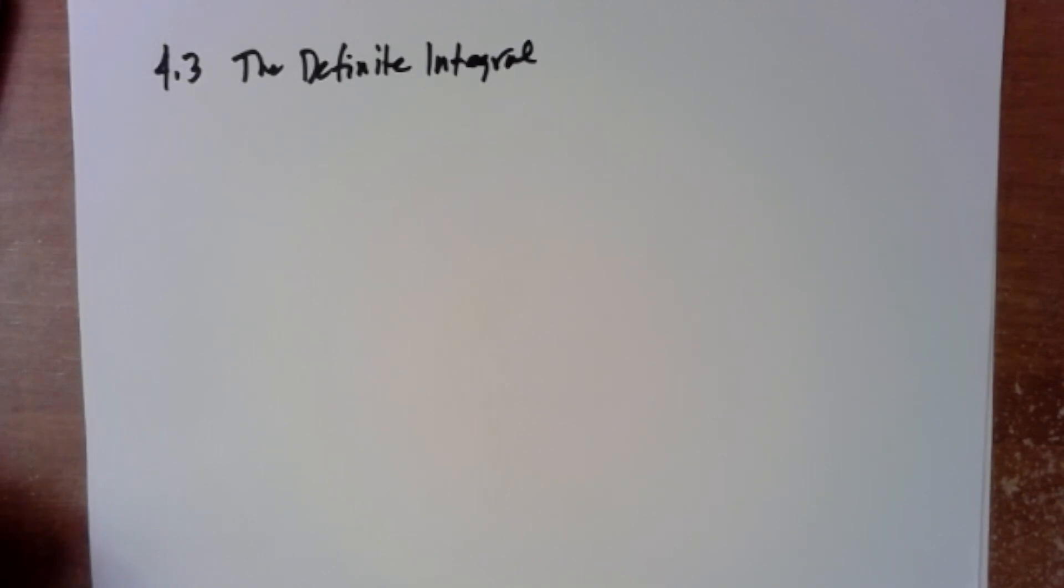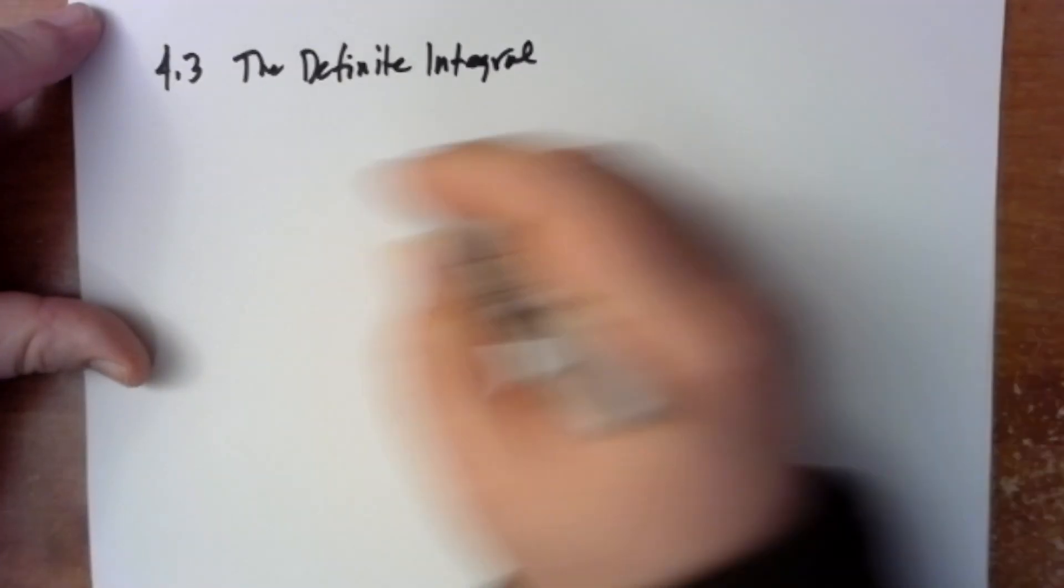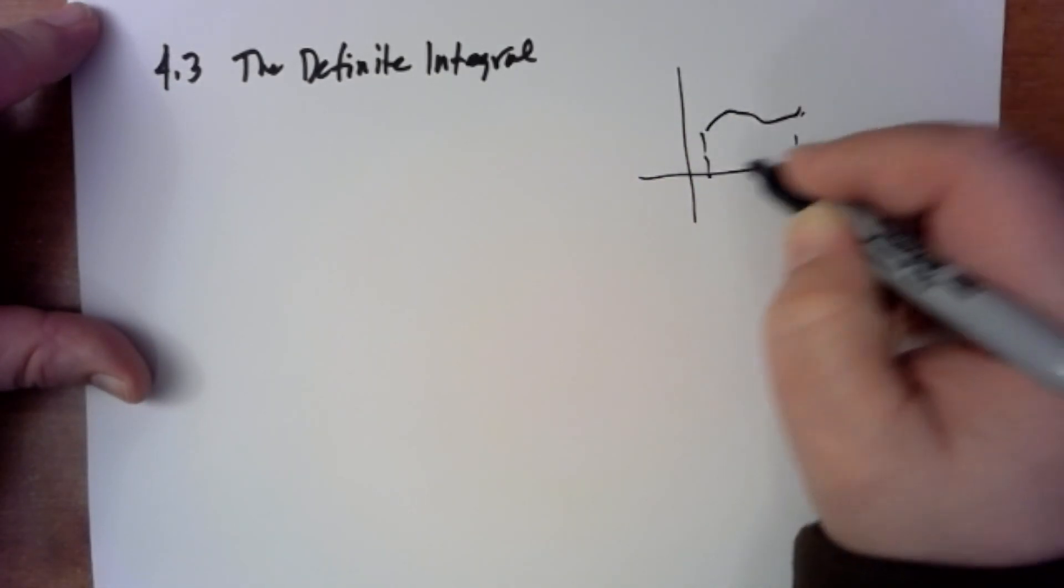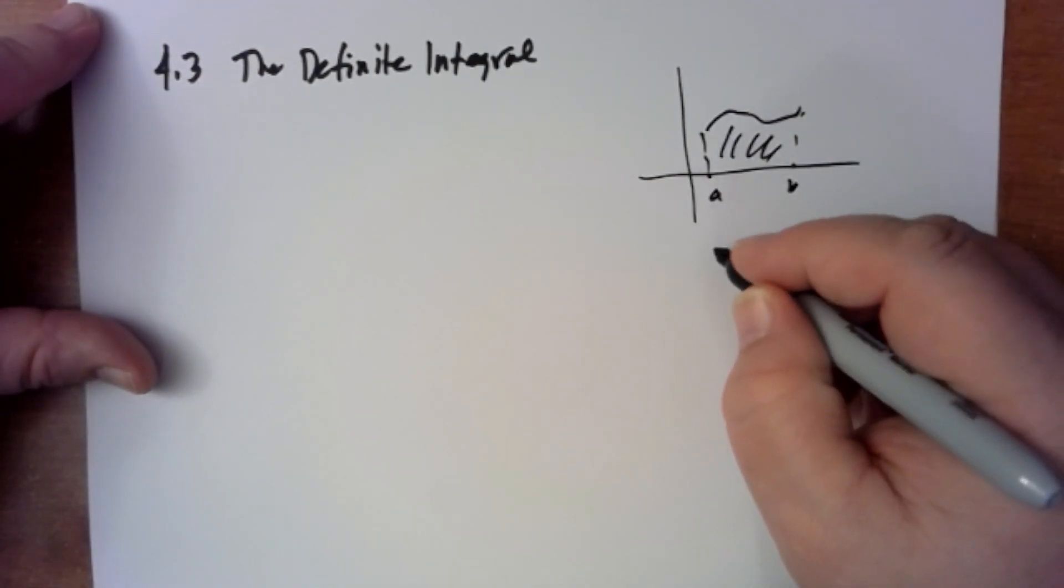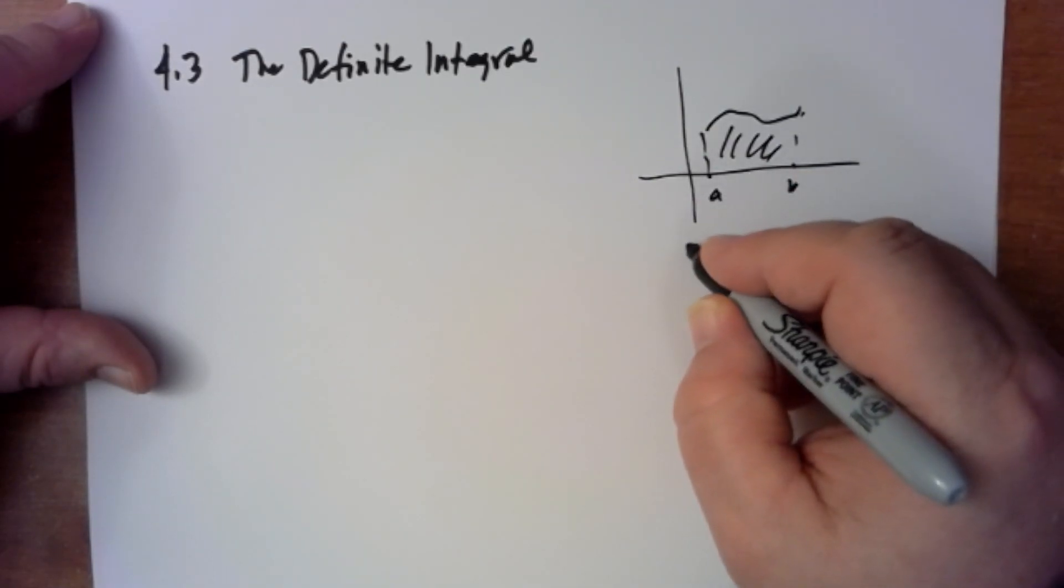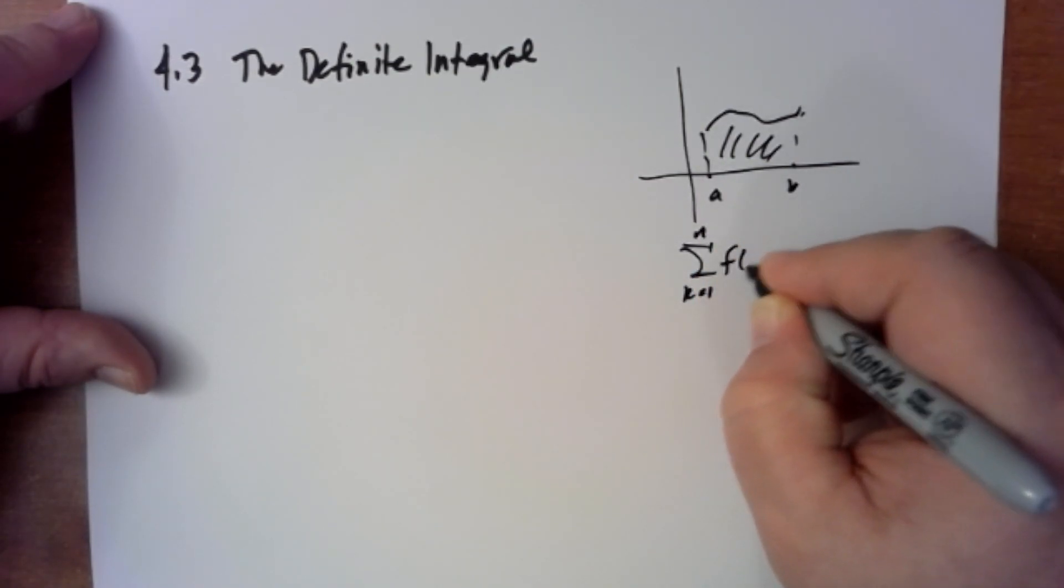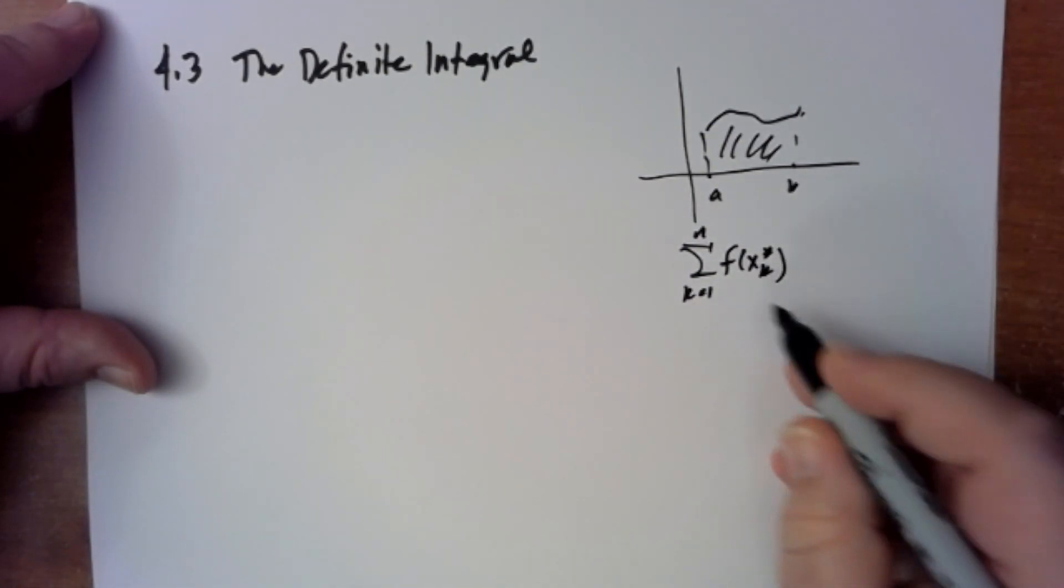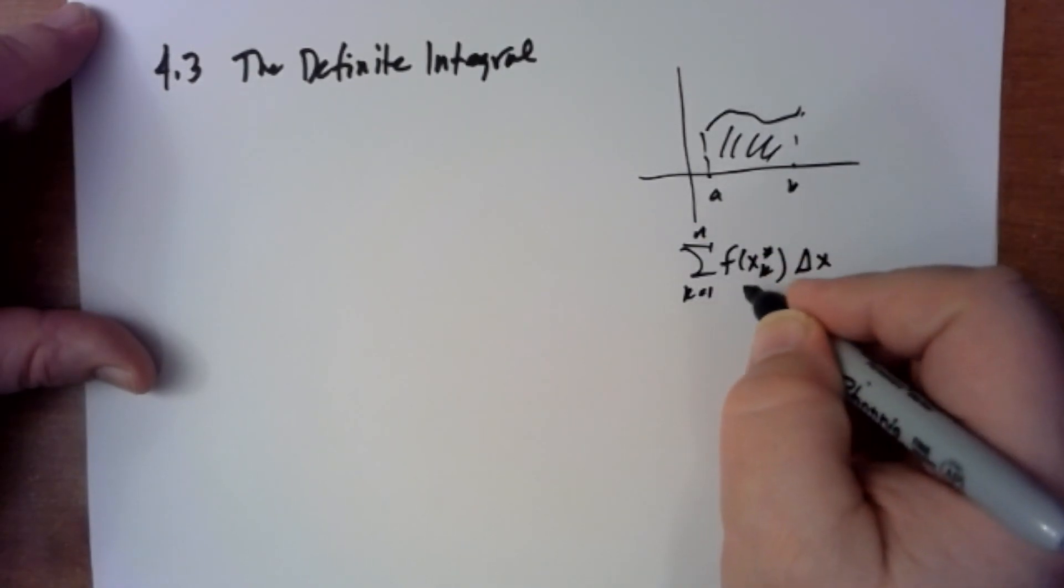All right, so today we're talking about 4.3, the definite integral. Let's go ahead and define it first. Remember when you're looking for the area under a curve from A to B, we can estimate that using n rectangles. So k equals 1 to n, that's the height of our rectangle. I don't want to specify that, so I'm going to write it as x_k star, and then times our dx, delta x.